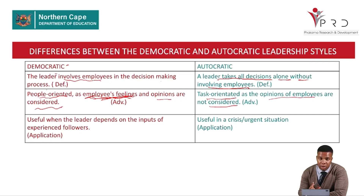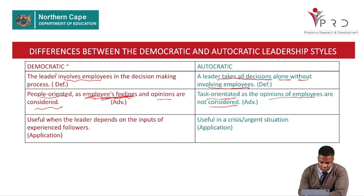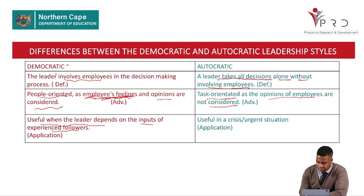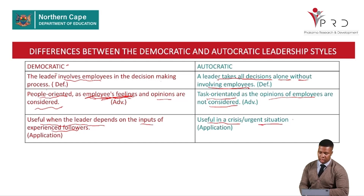The leader in autocratic style only focuses on giving the task and instructions on how to complete it. Democratic is useful when the leader depends on the inputs of experienced followers, while autocratic is useful in a crisis or urgent situation where the leader must make a decision alone without consulting followers.